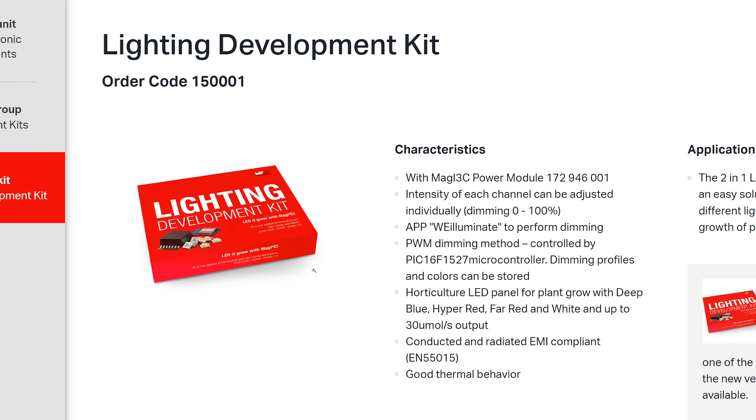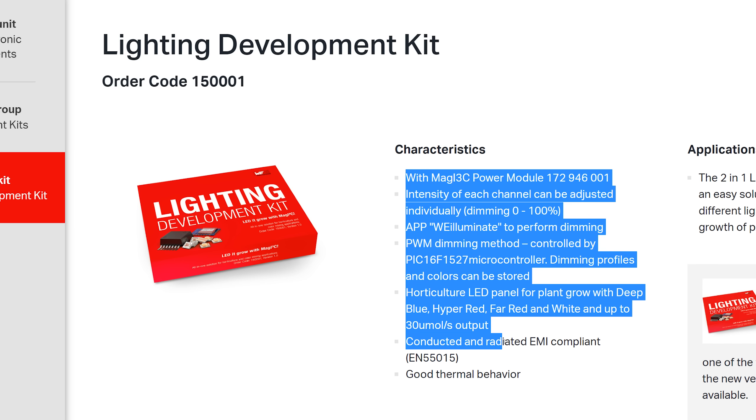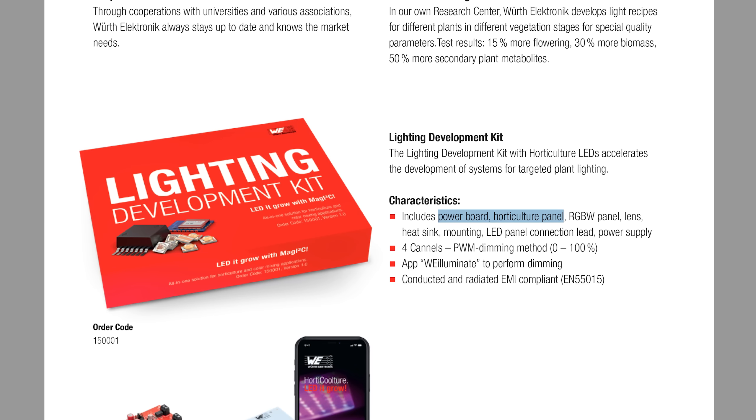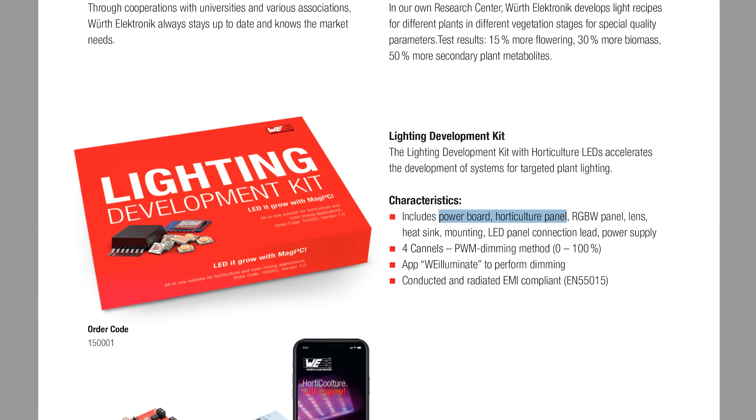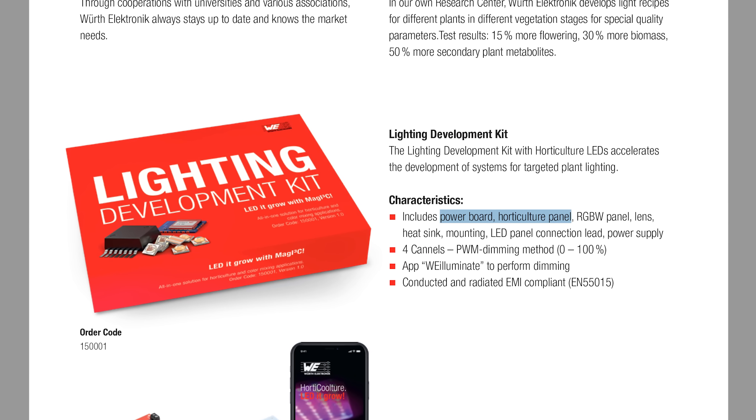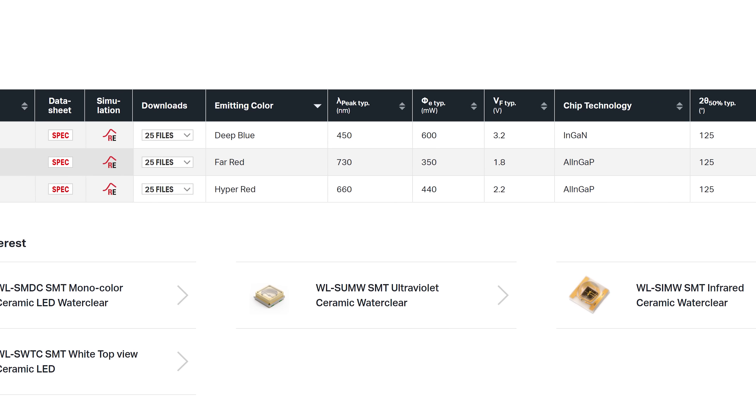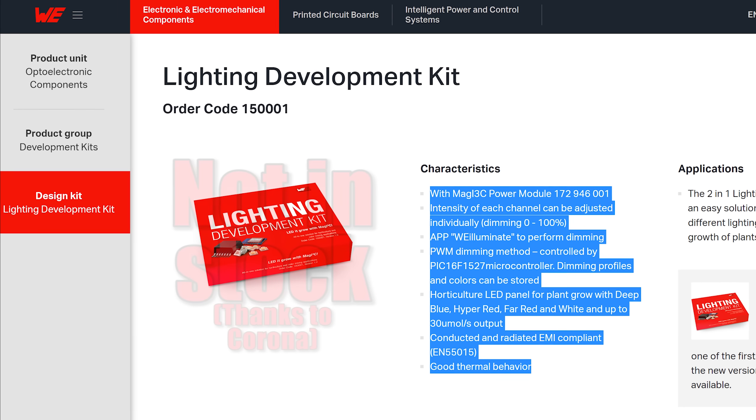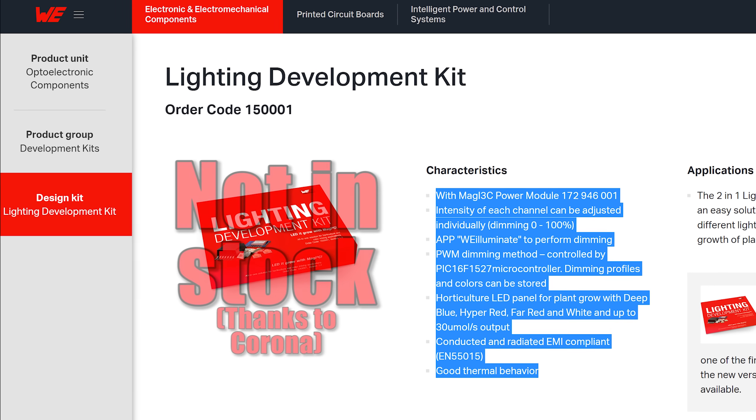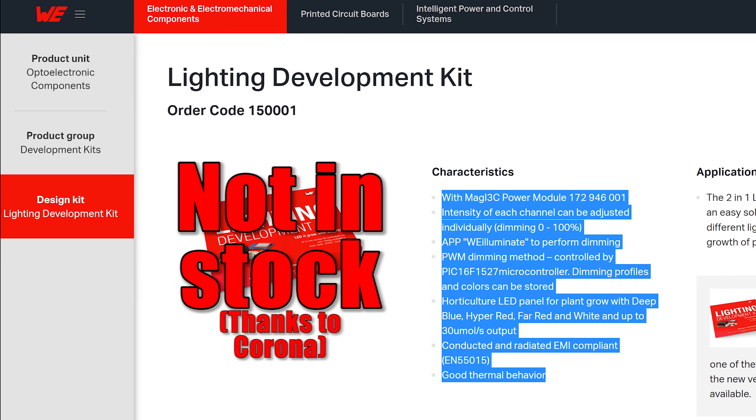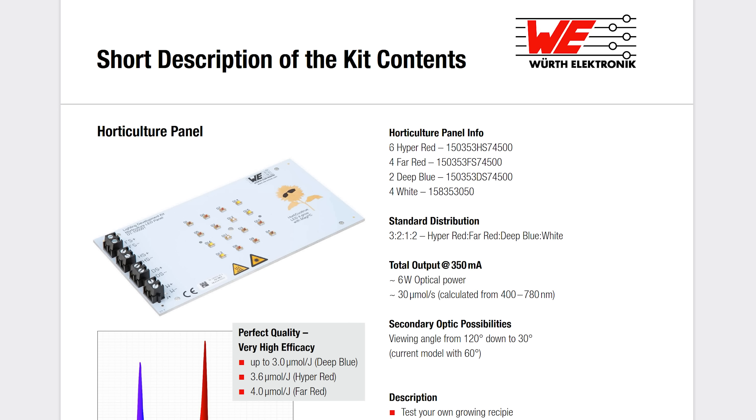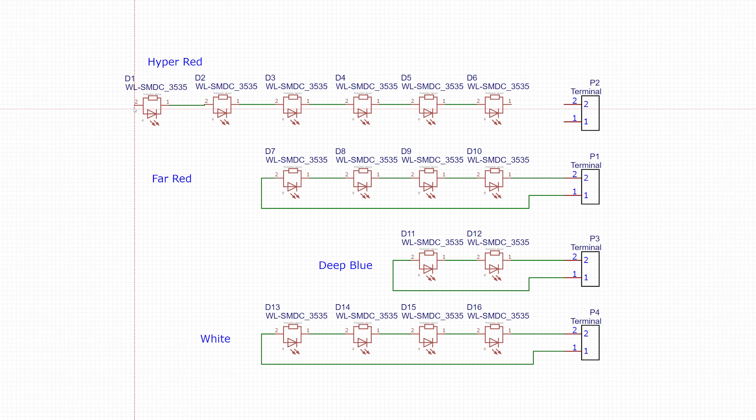But I was also partly lucky with that question because as it turns out Wirt Electronic carries a lighting development kit that not only comes with a driver PCB but also a Horticulture panel. I said partly lucky because while the LEDs were in stock other parts of the kit were apparently sold out and thus I had no chance of getting the kit at this point. Thanks to its manual though I at least got a reference point on how many LEDs of which type to use and thus I continued by designing a replica of this PCB.